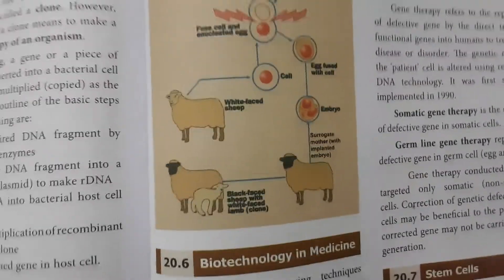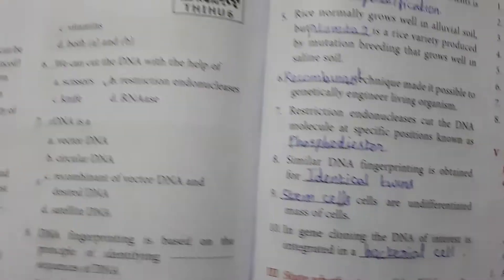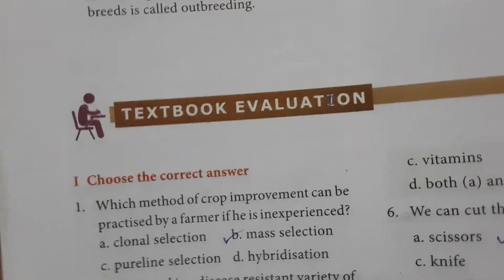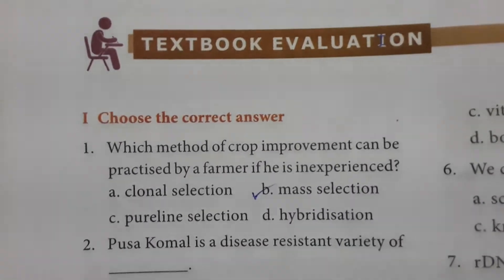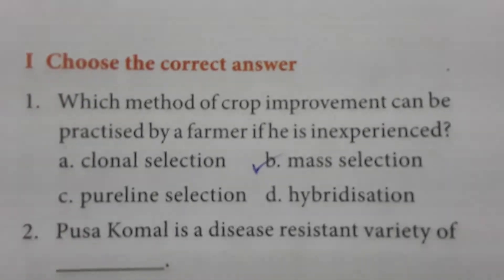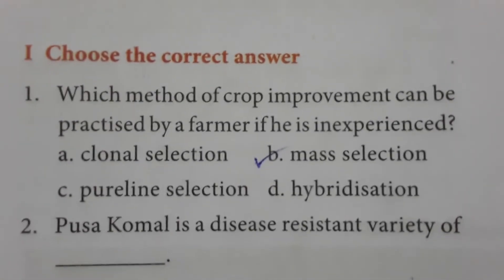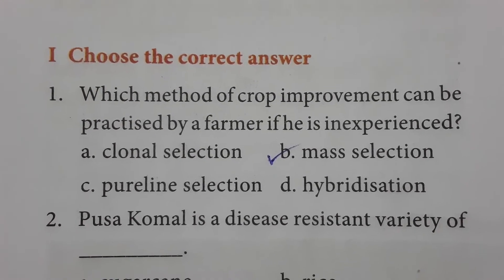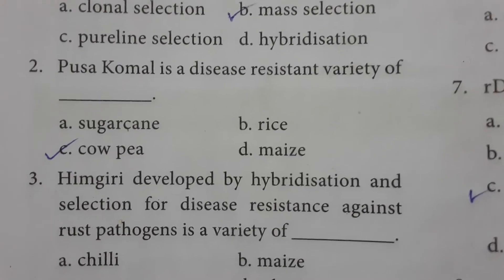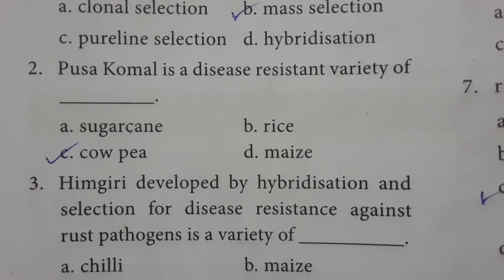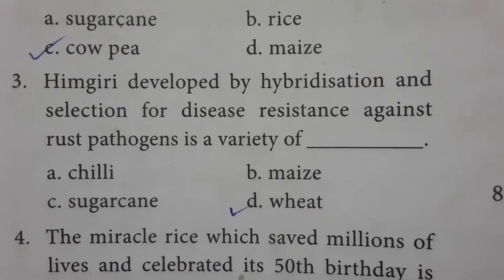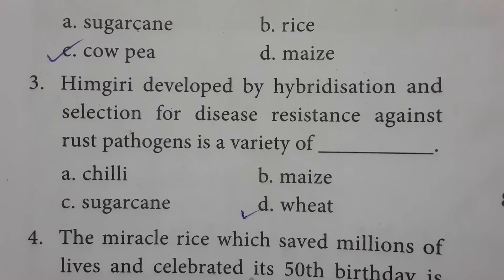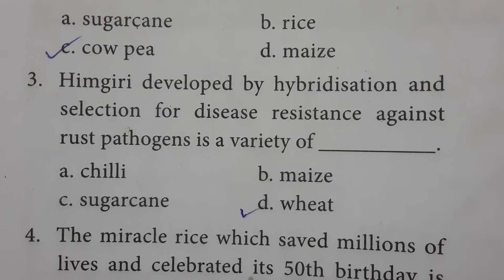Biotechnology in medicine can be practiced by a farmer if she is experienced. Mass selection is one method. Pusa Komal is a disease-resistant variety of cowpea. Himgiri was developed by hybridization and selection for disease resistance against rust pathogens, and is a variety of wheat.